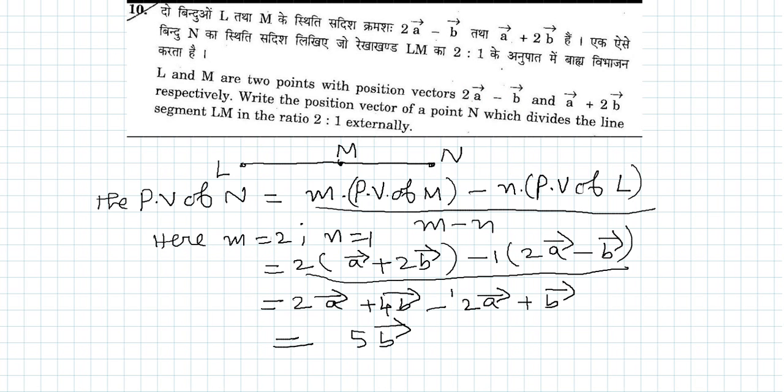m is 2 and n is 1, so substituting the values: m is 2 multiplied by the position vector of M. The position vector of M is the given vector which is a + 2b, minus...